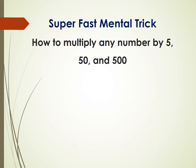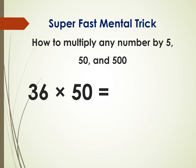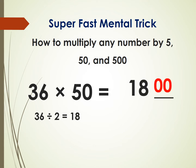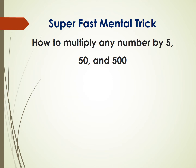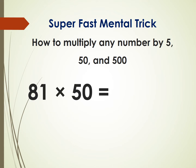Now let's look at multiplying by 50. Take 36 times 50. First, divide 36 by 2, you get 18. Now just put two zeros after it — 1800 is the answer.